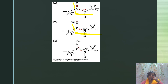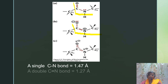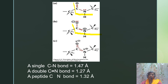So which is correct — is C–N a single bond or a double bond? Bond length measurements show that a single C–N bond is 1.47 Å and a double C=N bond is 1.27 Å, but the actual C–N bond in a peptide is 1.32 Å — neither a single bond nor a double bond. This is due to the resonance property of the C–N bond, giving it a partial double bond character that restricts rotation and plays a role in the three-dimensional structure of a protein.